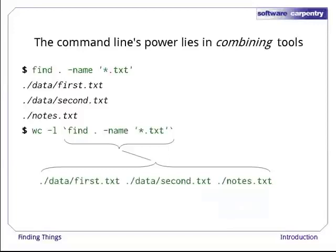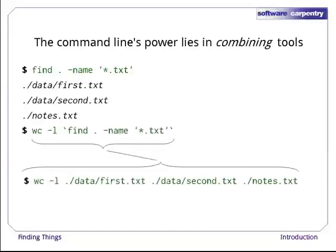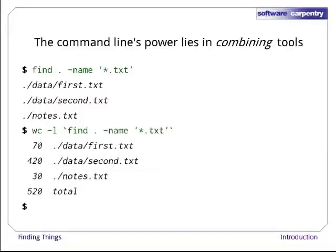So, when the shell executes this line, the first thing it does is run the command inside the back quotes. Its output is the three file names: data/first.txt, data/second.txt, and notes.txt. The shell then replaces the back quotes with that output to construct the command wc -l data/first.txt data/second.txt notes.txt. And as you can see, that does what we originally wanted.